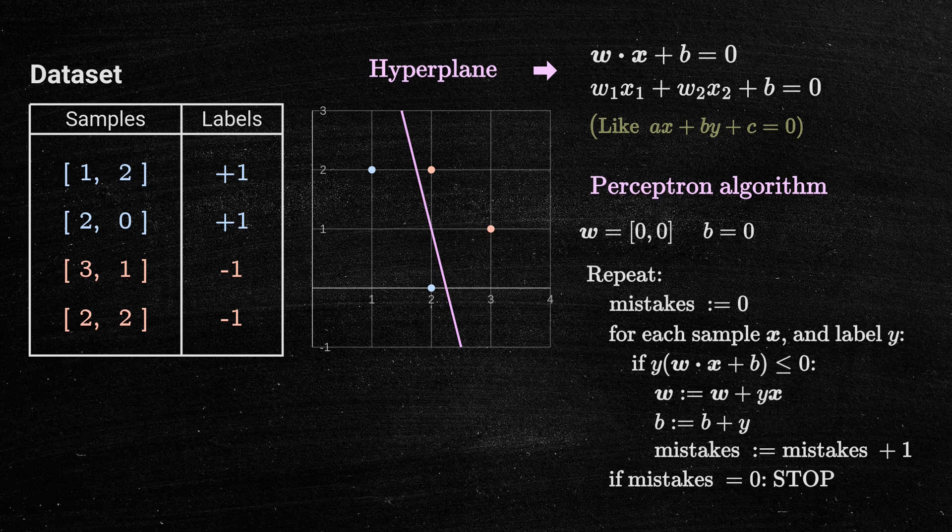In this example, the data set went through the process four times and finally found the optimal hyperplane.